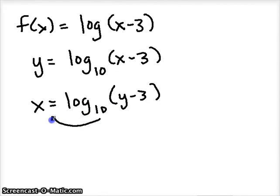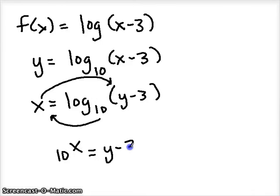Now use the circle method. Circle around to the other side of the equal sign and back over here. So we get 10 to the x power is equal to y minus 3. Solve for y. Just add 3 to both sides.